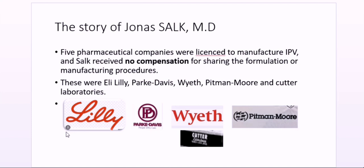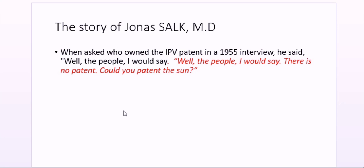Five pharmaceutical companies were licensed to manufacture IPV: Eli Lilly, Parke-Davis, Wyeth, Pitman-Moore, and Cutter Pharmaceuticals. Salk received no compensation. Three of these companies — Eli Lilly, Parke-Davis, and Wyeth — still exist today, while Pitman-Moore and Cutter have stopped producing. When asked in a 1955 interview whether he would patent the vaccine, Salk replied, 'There is no patent. Would you patent the sun?' — which became the tagline for his legacy.